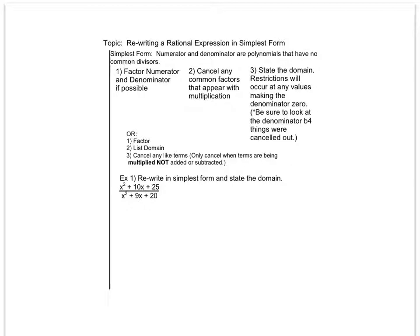First thing we're going to talk about is how we get them in simplest form. So these here are going to be our steps for simplest form. We're going to start by factoring both the numerator and the denominator. So notice factoring is never going away. We're going to cancel any common factors that appear with multiplication. We can never cancel with adding and subtracting unless we factor out a GCF first and then cancel through that multiplication.